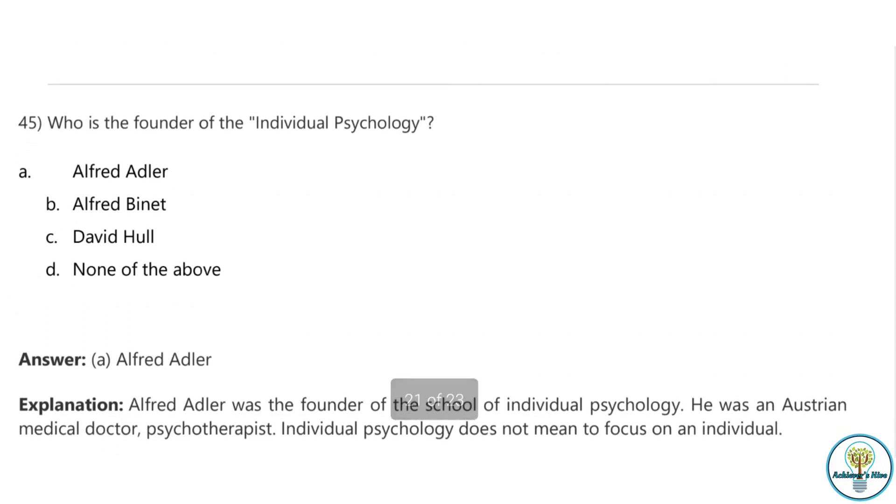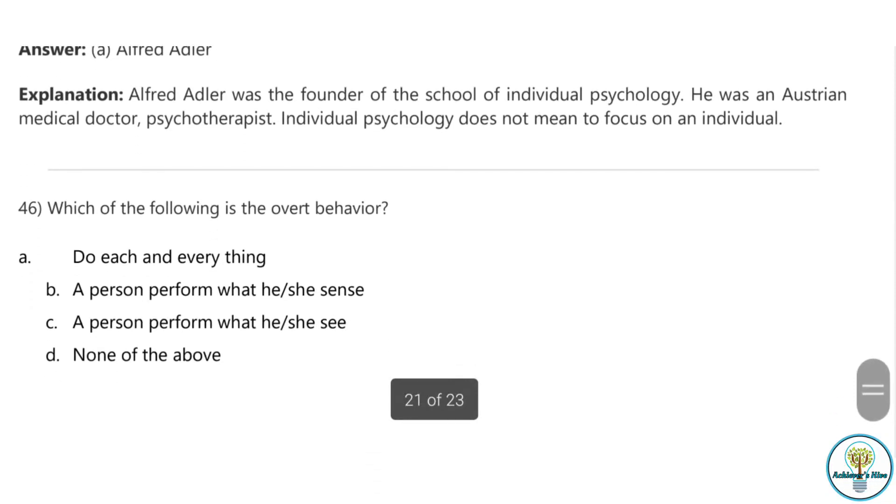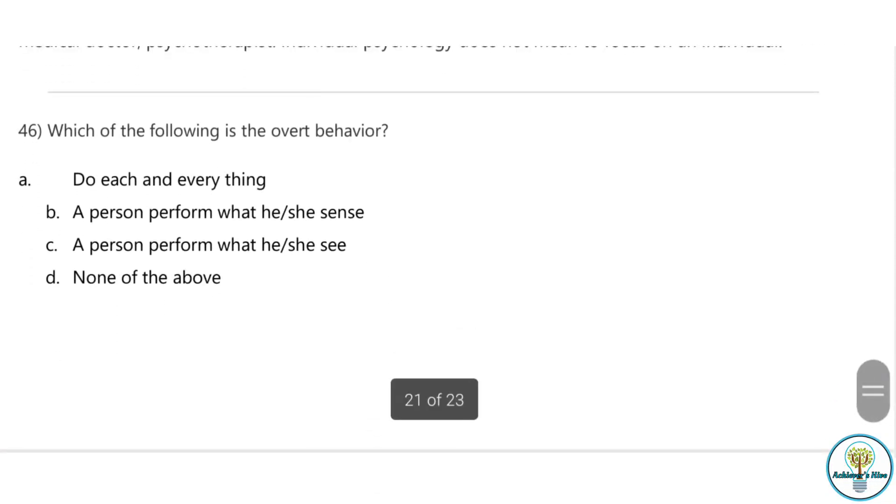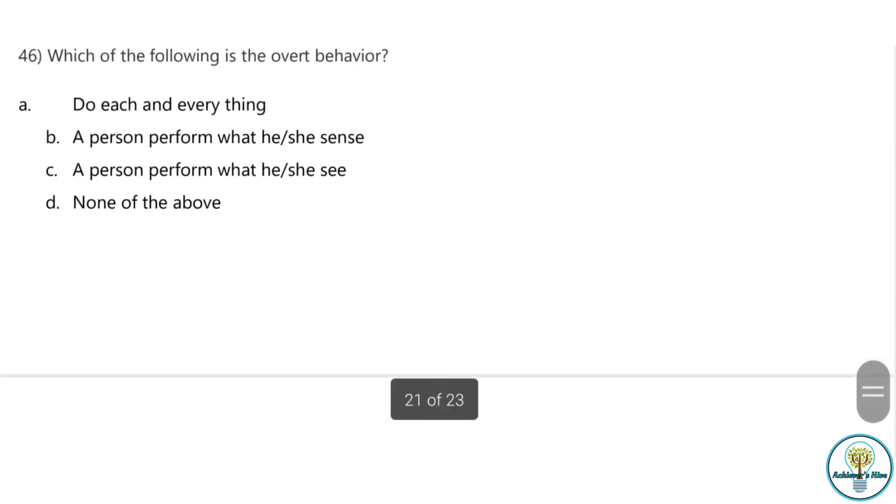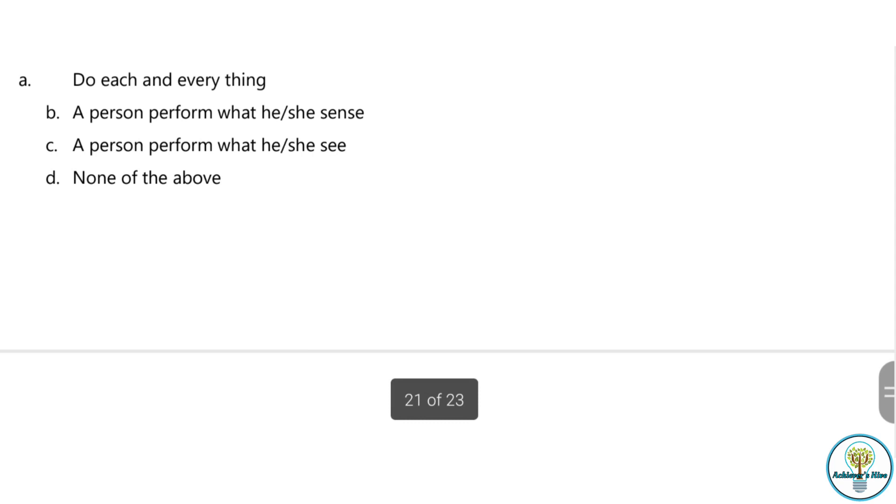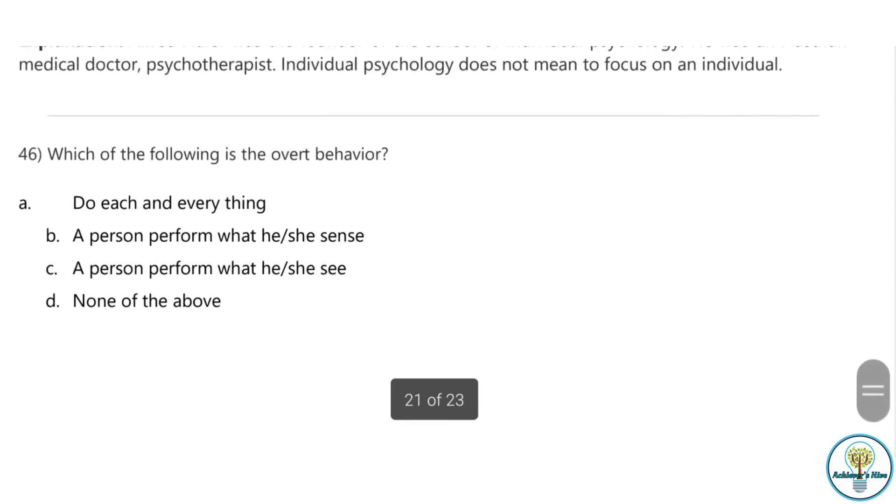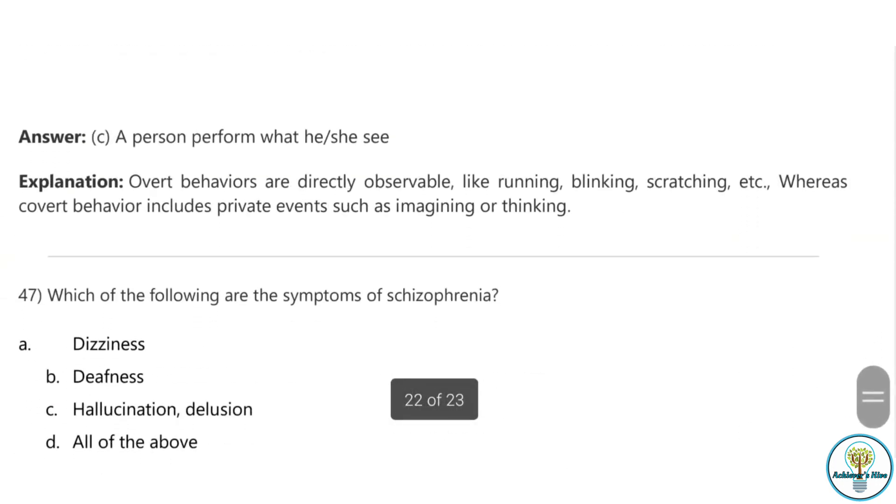Question forty-five: Who is the founder of the individual psychology? Alfred Adler. You have already studied in the Neo-Freudian approach in class 12 psychology. Question forty-six: Which of the following is the overt behavior? The correct answer is a person performs what he or she sees. Overt behaviors are directly observable like running, blinking, scratching, eating, or doing anything which can be seen from the outside.